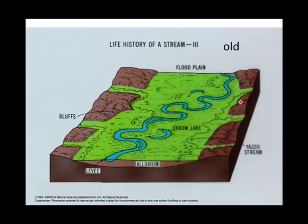Also notice a few more features here. On the side of the river, every time it floods, it deposits a little more sediment on either side of the stream channel. That becomes a natural levee. The tributaries have a hard time getting through to the stream, so very often they will parallel the stream for a while before they join it. Those tributaries are called Yazoo streams or Yazoo tributaries. Some of these oxbow lakes are drying up and it becomes very swampy.